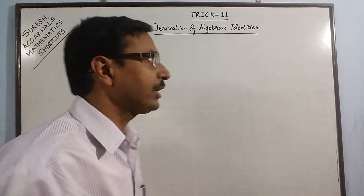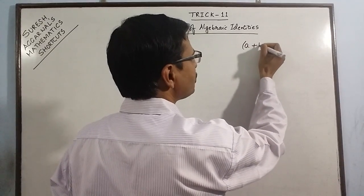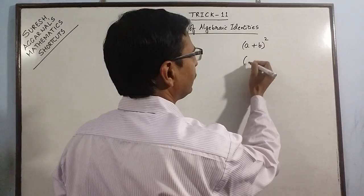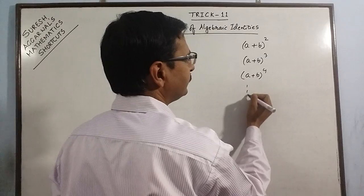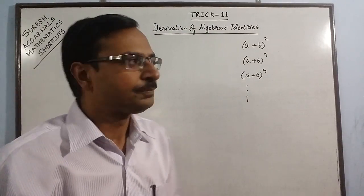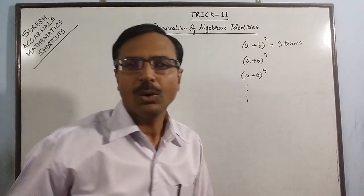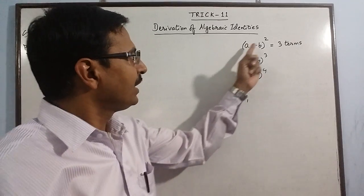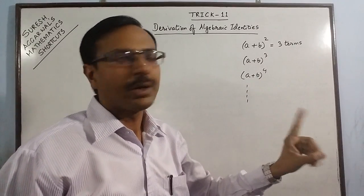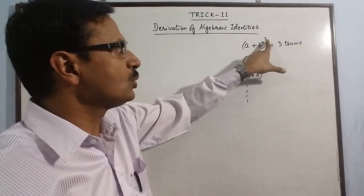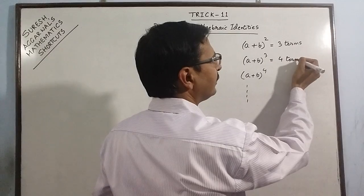The first concept used for deriving the identities is knowing the expansions of A plus B whole square, A plus B whole cube, A plus B power 4, and so on. The thing to remember here is that the expansion of A plus B whole square contains three terms. The number of terms contained in any expansion is always one more than the degree. So if the power is 2, then we have 3 terms. If the power is 3, then we have 4 terms and so on.